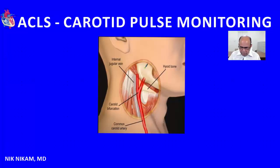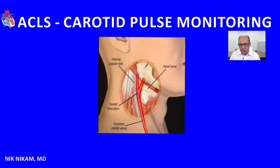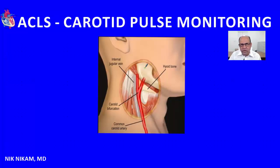The internal carotid artery does not divide until it reaches the base of the brain. But how do we know in a patient where the carotid artery is? What are the anatomical structures we need to be concerned about? As you can see here, we have a triangle.